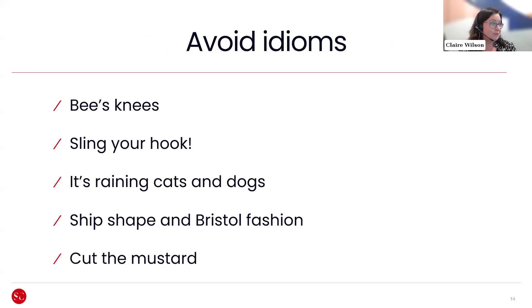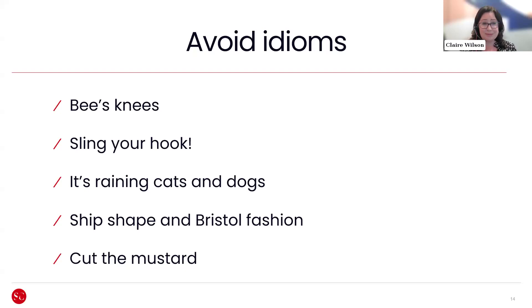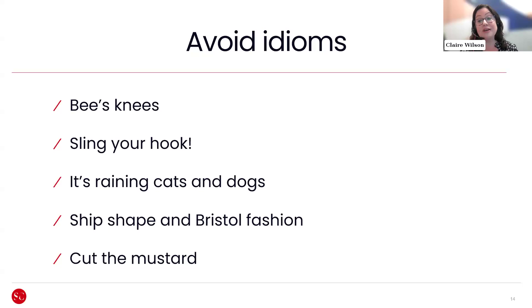The next thing to weed out is idiomatic language. Some phrases feel very natural in British English but may not be in accepted use in American or Australian English, let alone other languages. 'Bee's knees', 'sling your hook', 'it's raining cats and dogs' — try explaining that last one to someone you're translating for. 'All ship shape and Bristol fashion' — relevant for us, based in Bristol. These all have very specific cultural origins that make sense when you're in touch with the history and culture of that location, but you can't simply translate them. That's why a direct translation really doesn't do the job — we need to understand what we're trying to express and translate it in a much more sensitive, considered way.